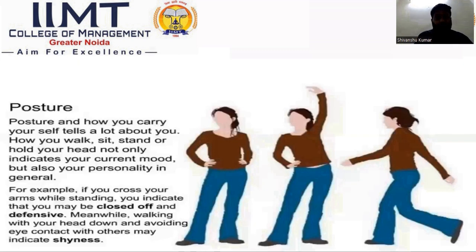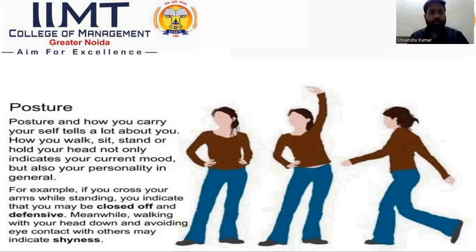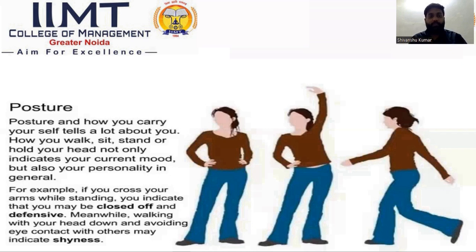Posture — how you carry yourself, including how you walk, sit, stand, and hold your head — not only indicates your current mood but also your personality in general. For example, crossing your arms while standing may indicate you are closed off and defensive. Not making eye contact may signal shyness. Standing straight versus standing comfortably both show different body postures and attitudes — straight may indicate nervousness, while comfortable posture indicates relaxation.